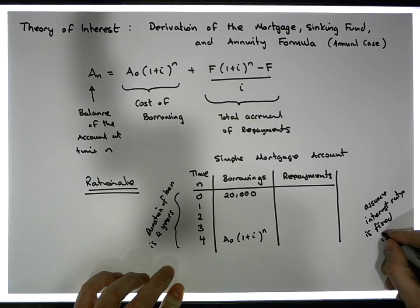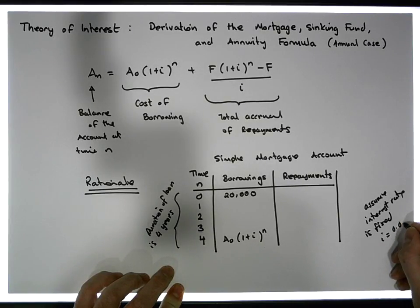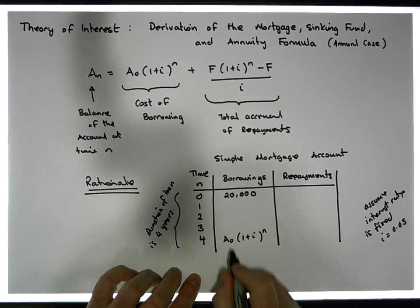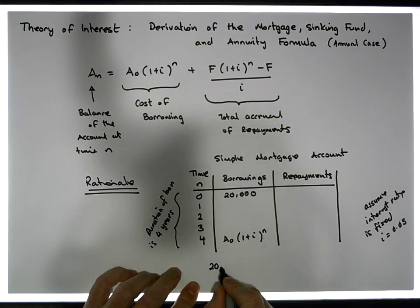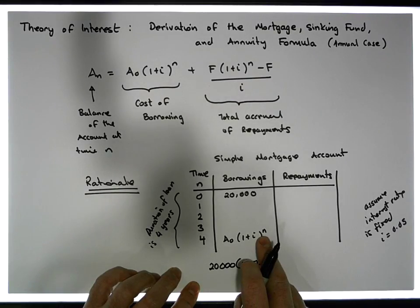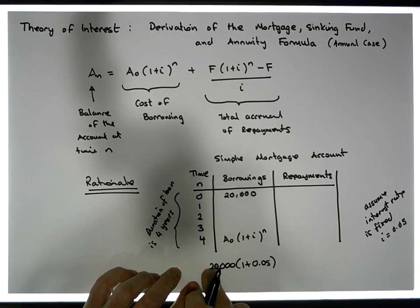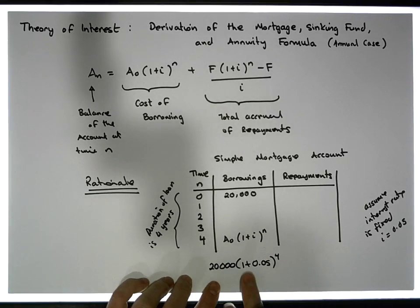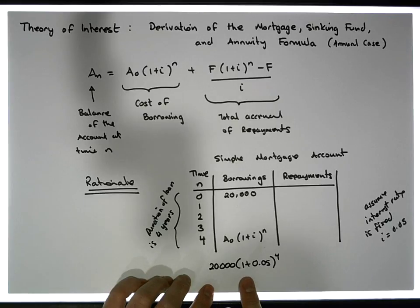The interest rate is fixed at i = 5%, or 0.05. The cost of this borrowing is going to be twenty thousand times one plus 0.05 raised to the power of how many years it takes to repay — which is a four-year period. So that's what we need to pay the bank back.